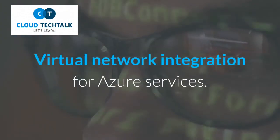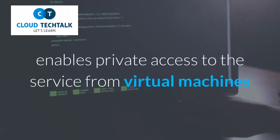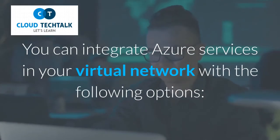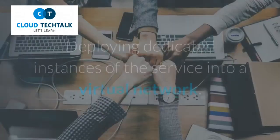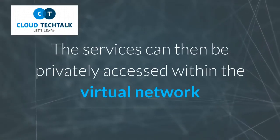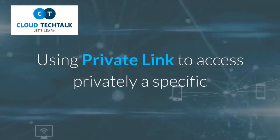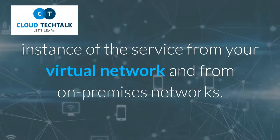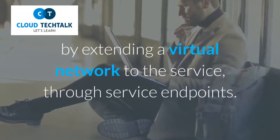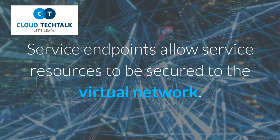Virtual Network Integration for Azure Services: integrating Azure services into an Azure virtual network enables private access to the service from virtual machines or compute resources in the virtual network. You can integrate Azure services in your virtual network with the following options: deploying dedicated instances of the service into a virtual network, using PrivateLink to access privately a specific instance of the service from your virtual network and from on-premises networks, or accessing the service using public endpoints by extending a virtual network to the service through service endpoints. Service endpoints allow service resources to be secured to the virtual network.